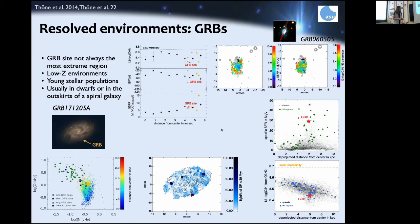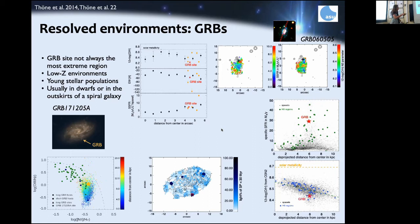If you're in the more local universe, I like to not only observe the global host properties but to get down to the properties of the star-forming region around the GRB or supernova. Here are two examples. The first is a map of star formation rate for GRB 060505 from late 2006 in a dwarf spiral galaxy. The GRB is in a low-metallicity, high-star-formation region — it's a controversial GRB with a four-second duration.